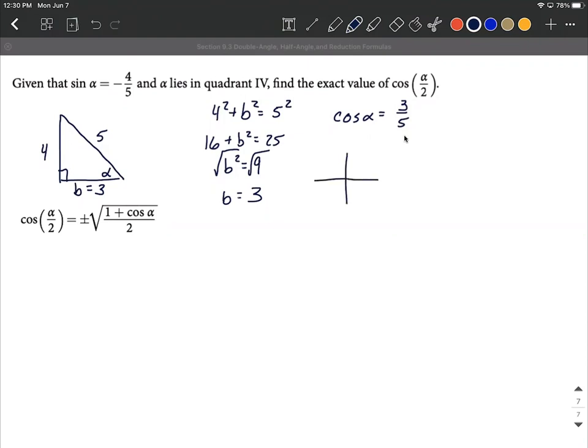Thinking about that, I like using this phrase: all students take calculus, which gives us an idea that everything's positive in the first quadrant, only sine is positive in the second quadrant, tangent in the third, and then cosine in the fourth. Alpha lies in the fourth quadrant, so cosine is going to be positive in the fourth quadrant. I could include a positive here, but I don't really need a plus sign. Do take into account which quadrant your angle lies in, because sometimes that's going to be positive, sometimes negative.